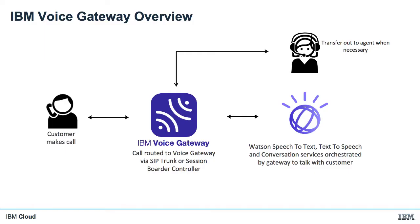So what is Voice Gateway? Essentially, Voice Gateway allows us to connect a bunch of Watson services to someone on the end of a phone. Voice Gateway is handling all the conversion, the telephony integration, and then managing the various Watson services — in this case speech-to-text, text-to-speech, and conversation. It allows us to talk to a Watson conversation over the phone, and then if required, we can have the call directed out to an agent. So this is a fairly typical use case for Voice Gateway.